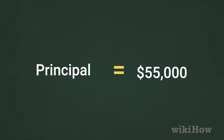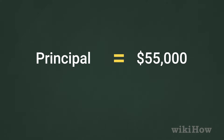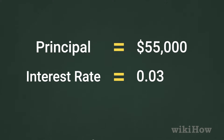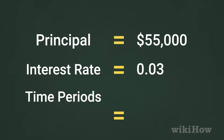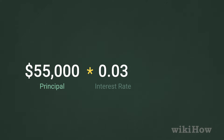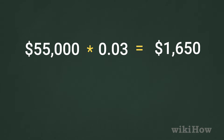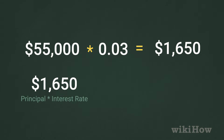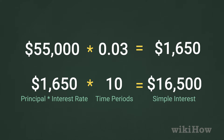For example, if the principal is $55,000, the interest rate is 3%, and the number of time periods since the loan began is 10 years. First, you'd multiply $55,000 by 0.3 to get $1,650. Then, you'd multiply $1,650 by 10 to get $16,500.